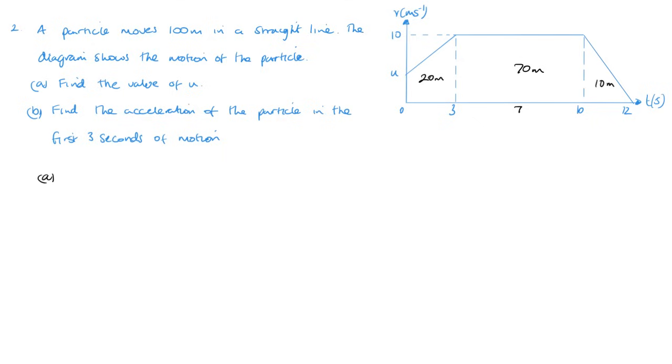So area of trapezium is a plus b divided by 2 times h, isn't it? Now the area is 20. A is u, plus b will be 10, divided by 2 times by a height, which is 3.